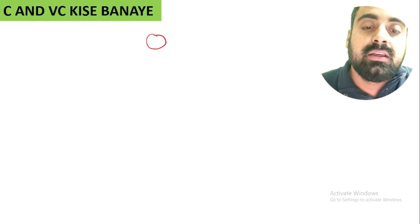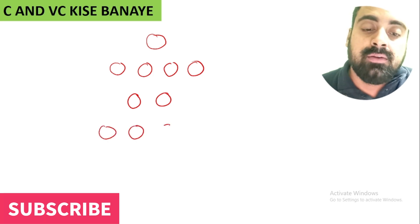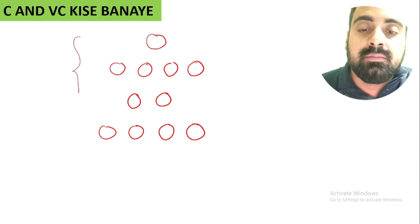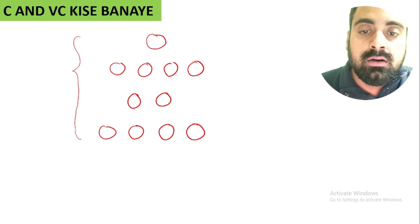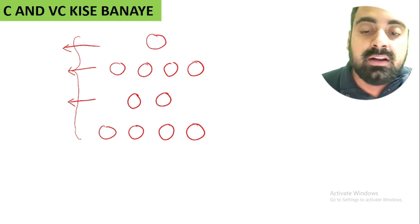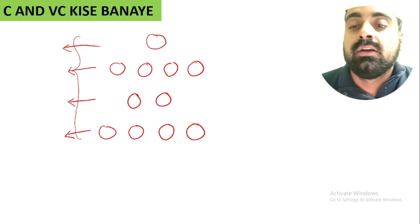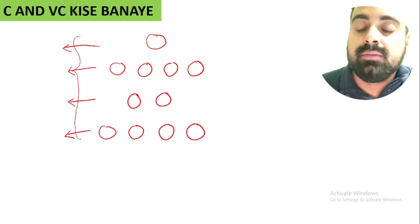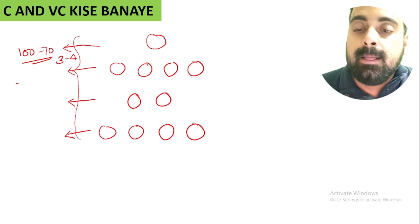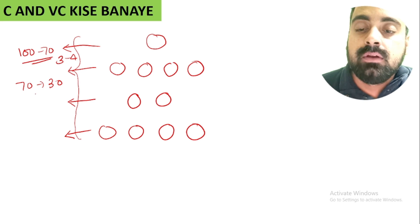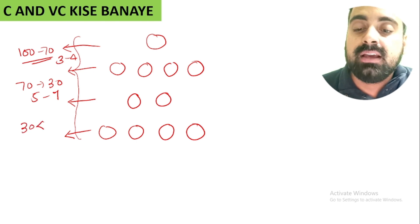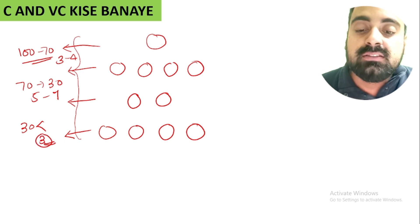You have made a team with 1 wicketkeeper. What categories have you put your players in? From 100% to 70% selection, you have put in 3 to 4 players. From 70% to 30% you have put in 5 players. And from below 30% you have put in 3 players. In this way you have made your team.